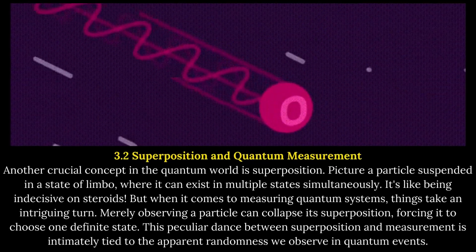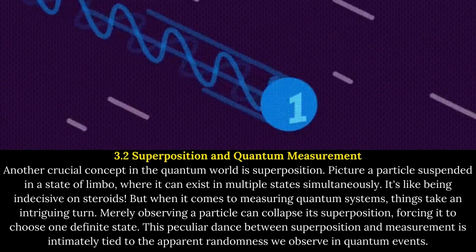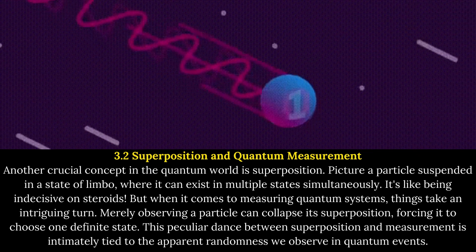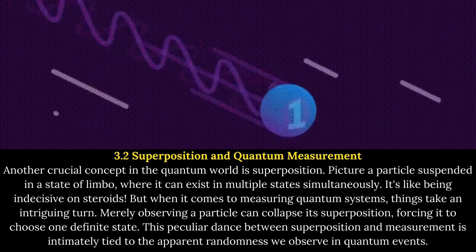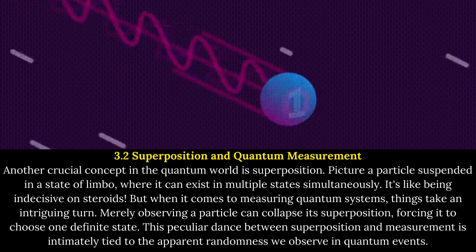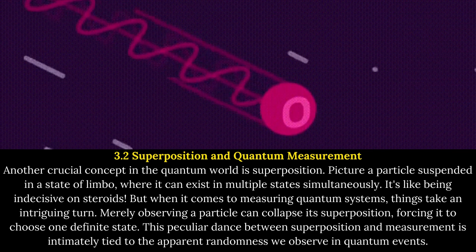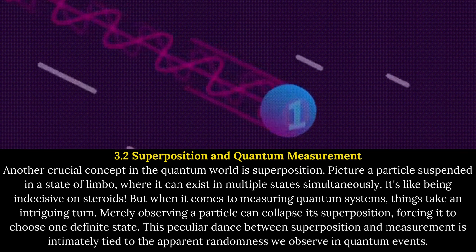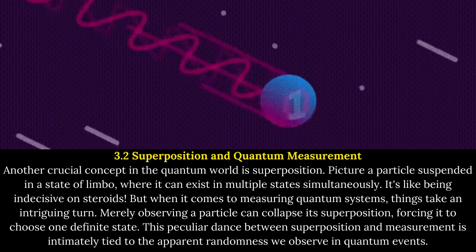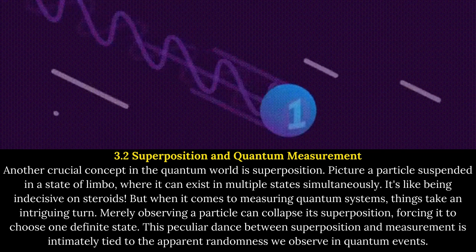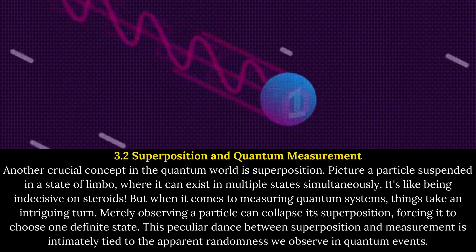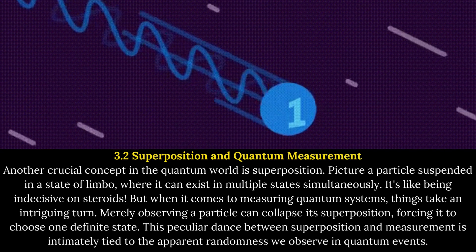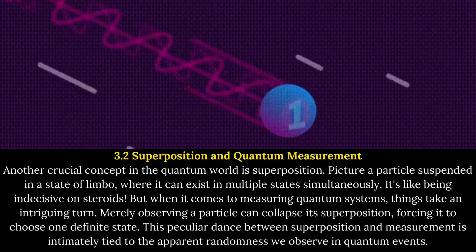Another crucial concept in the quantum world is superposition. Picture a particle suspended in a state of limbo, where it can exist in multiple states simultaneously — it's like being indecisive on steroids. But when it comes to measuring quantum systems, things take an intriguing turn. Merely observing a particle can collapse its superposition, forcing it to choose one definite state. This peculiar dance between superposition and measurement is intimately tied to the apparent randomness we observe in quantum events.